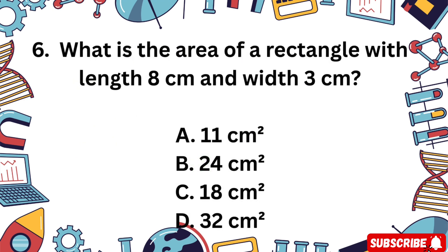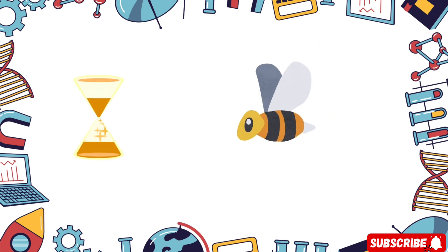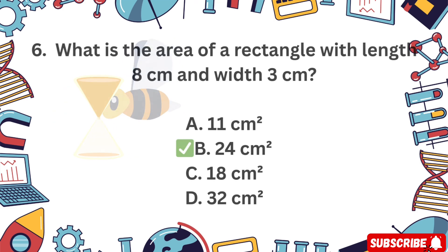Question 6. What is the area of a rectangle with length 8 centimeters and width 3 centimeters? A 11 square centimeters, B 24 square centimeters, C 18 square centimeters, D 32 square centimeters. Area is length times width. The correct answer is B 24 square centimeters.